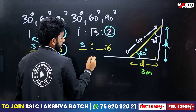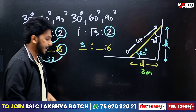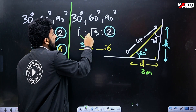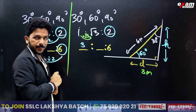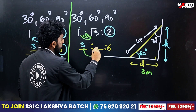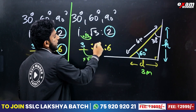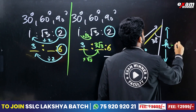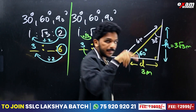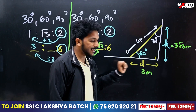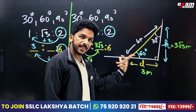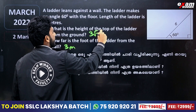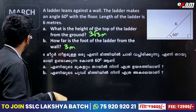We have 30 opposite 1 and 60 opposite √3. That is 1 into √3. How can we multiply 3 into √3? 3 into √3 is 3√3. Then we have 3√3. So D is equal to 3 meters, and the height is 3√3 meters. It is simple.